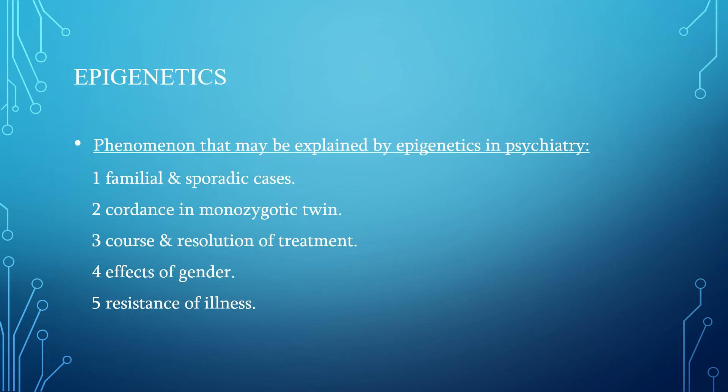Phenomena that may be explained by epigenetics in psychiatry, due to mechanisms of methylation and genomic imprinting, include: familial and sporadic cases, concordance in monozygotic twins, course and resolution of treatment, effects of gender, and resistance of the illness.